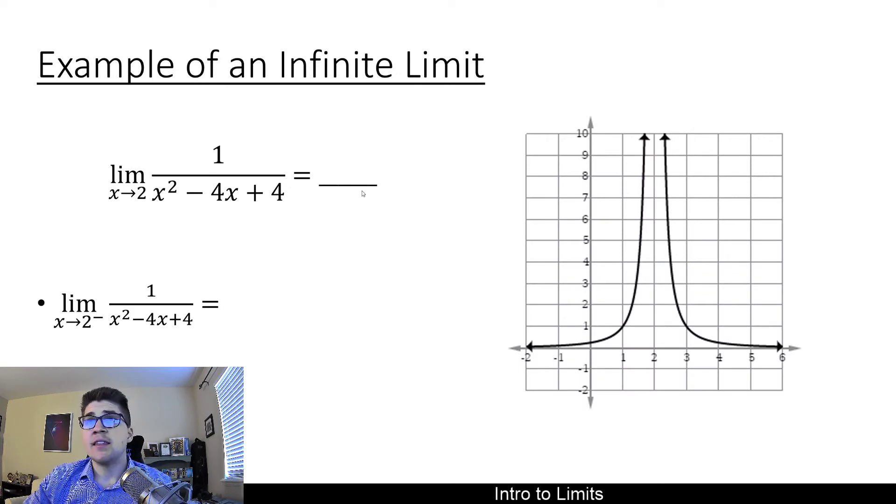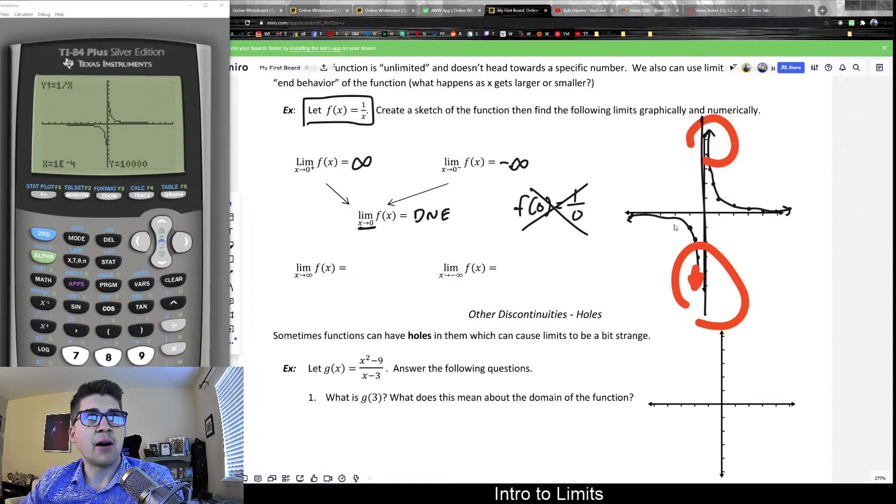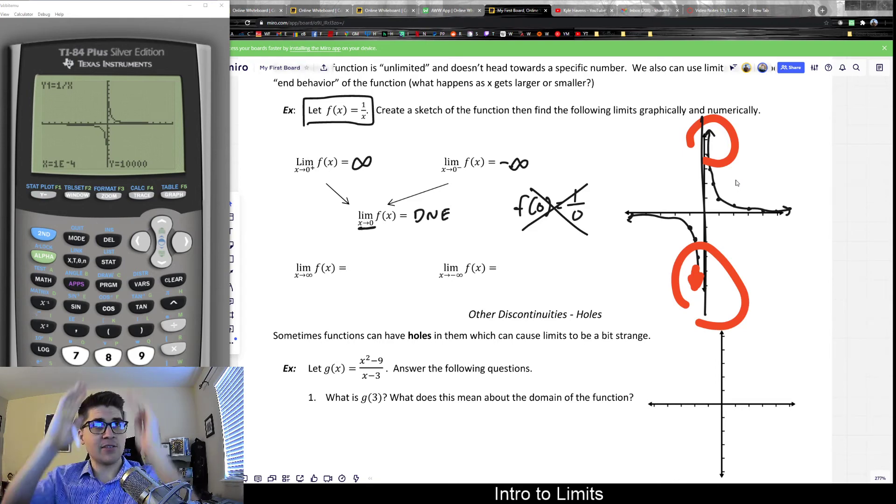This one, the limit actually did exist. It was headed towards positive infinity because both of those were going in the same direction. But notably different about this example is these are headed in different directions. So the limit does not exist. They don't meet up or they're not headed to that same place.